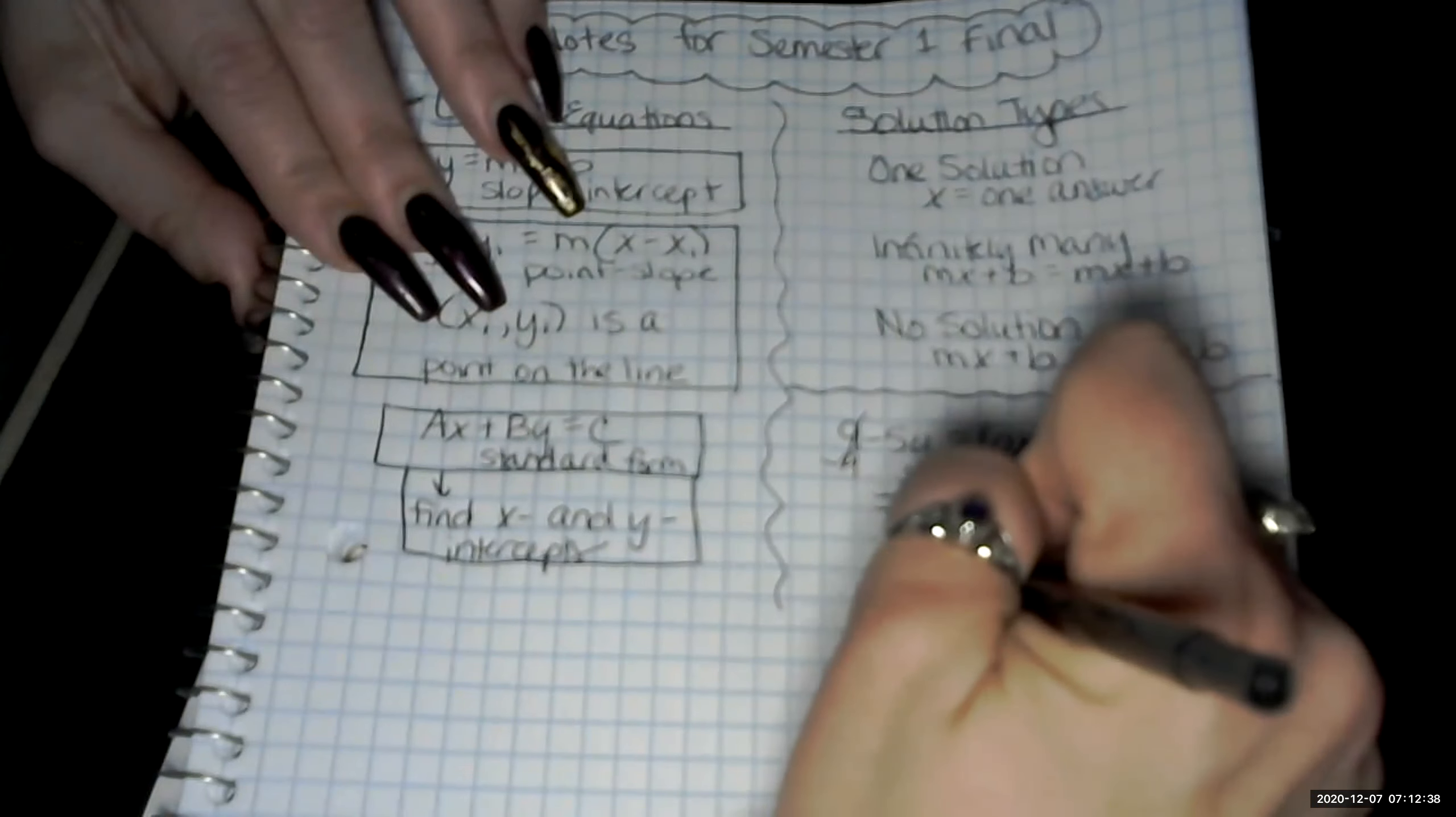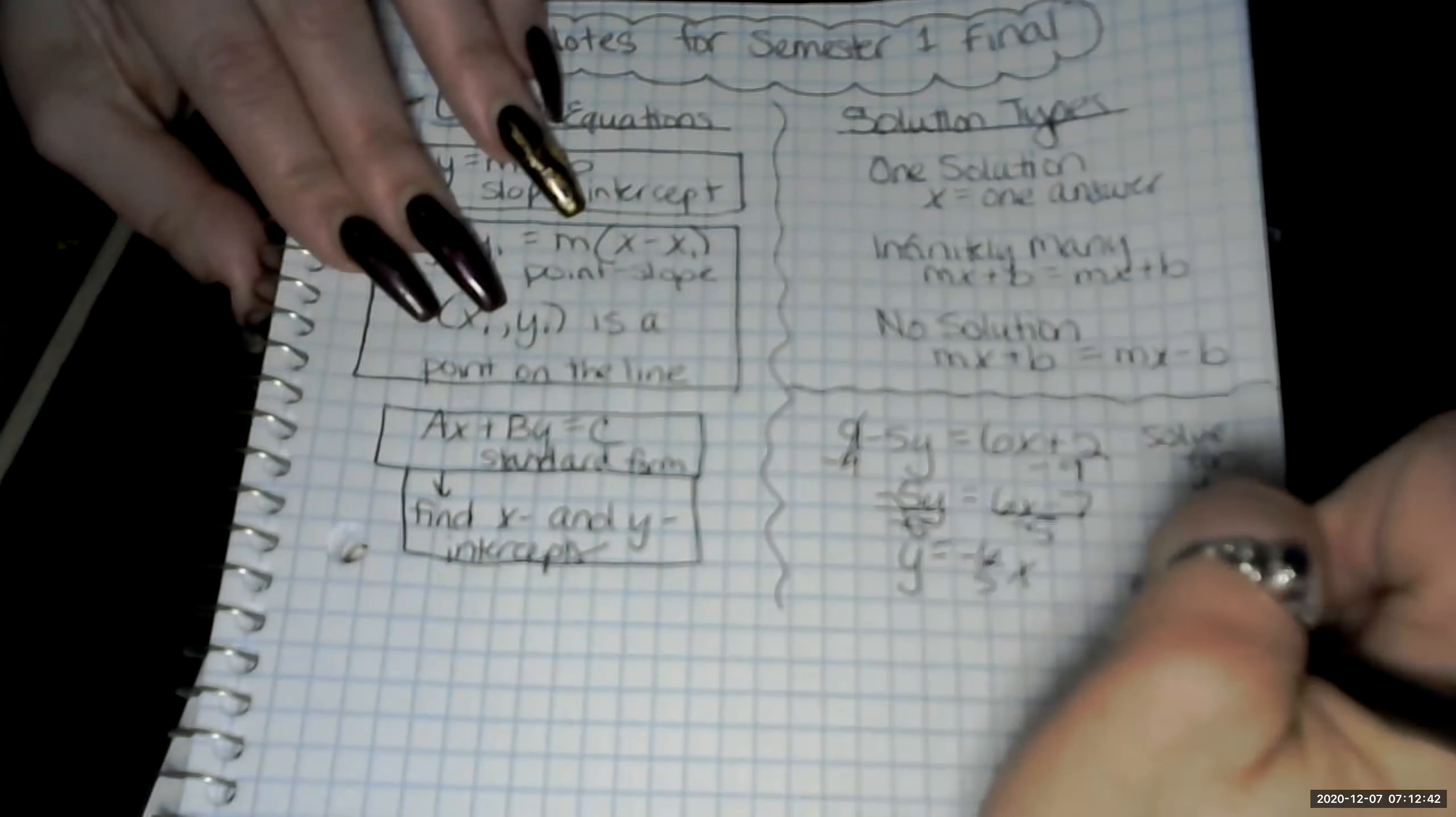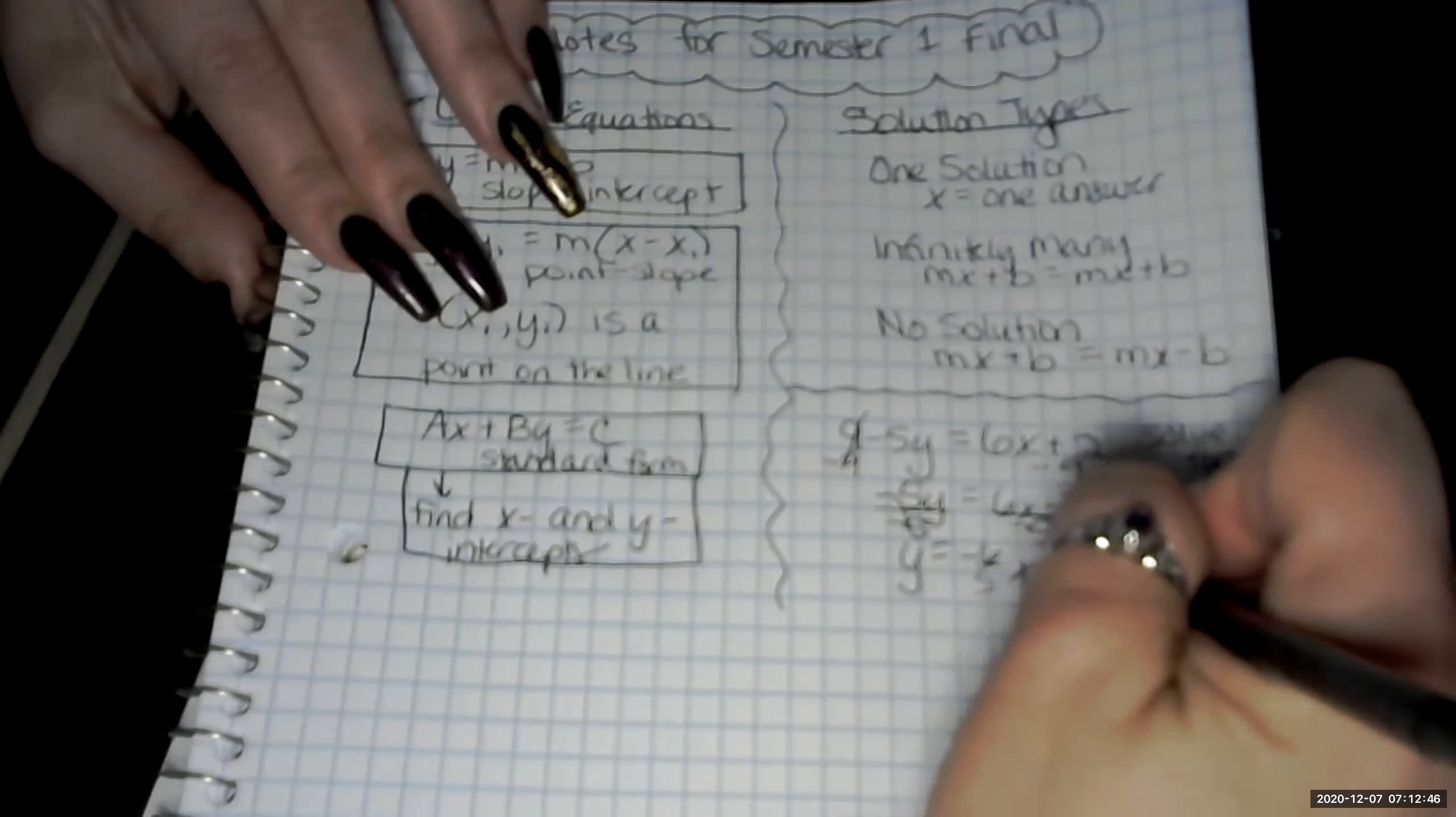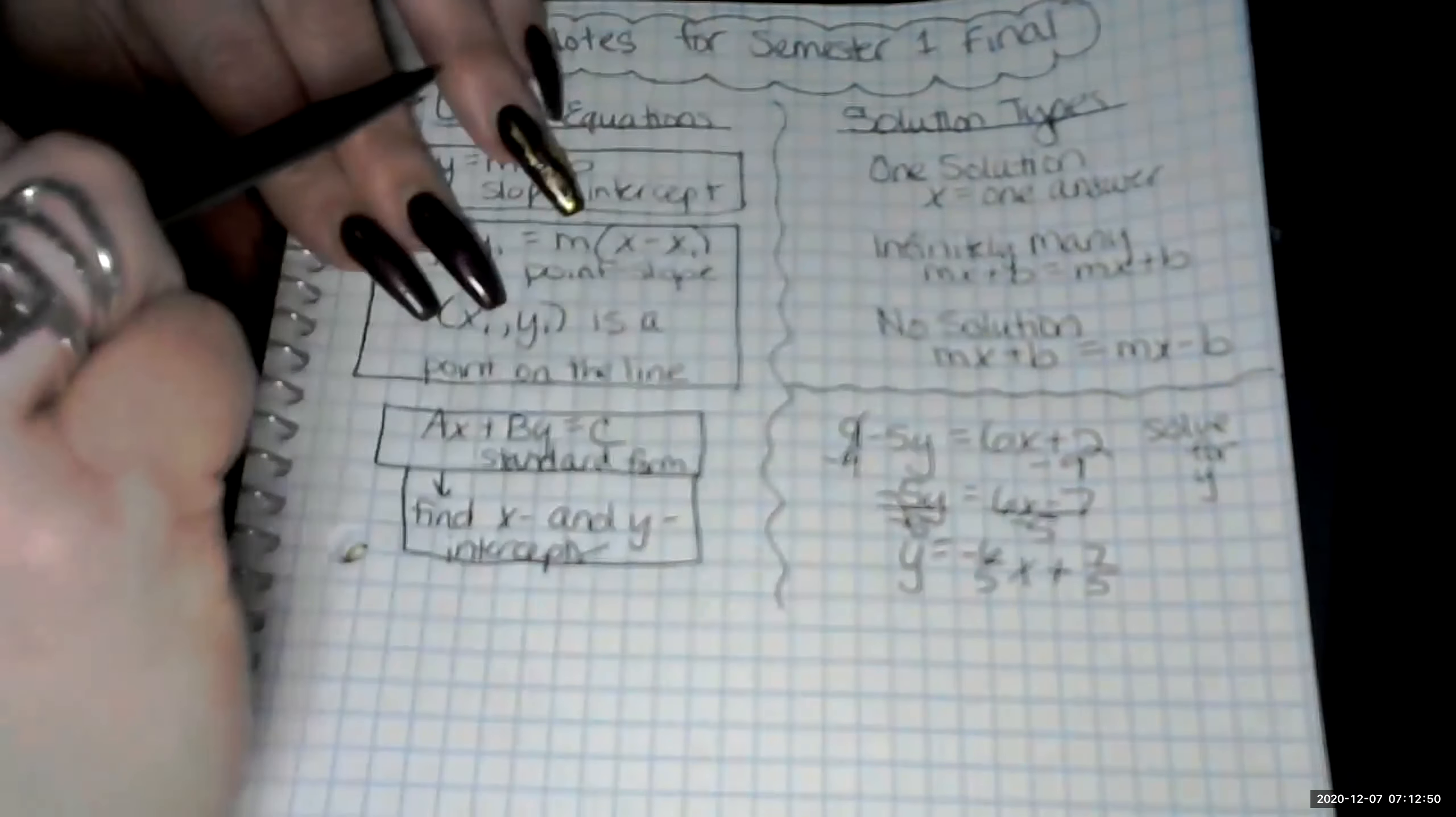Y equals negative 6 fifths x plus 7 fifths. Because they were both negative, it turns into plus 7 fifths.